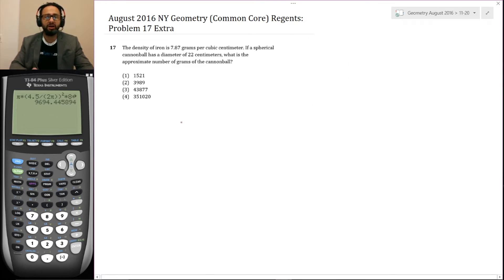And here it is. The density of iron is 7.87 grams per cubic centimeter. If a spherical cannonball has a diameter of 22 centimeters, what are the approximate number of grams of the cannonball? And then there's a few answers ranging from 1,521 grams, which is 1.5 kilograms to all the way to 351,020 grams, which is 351 kilograms.